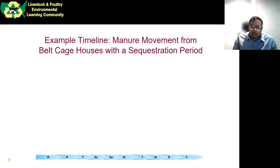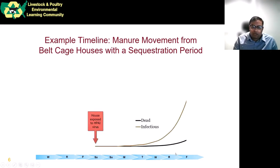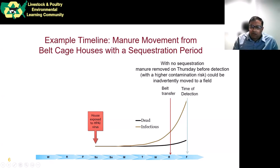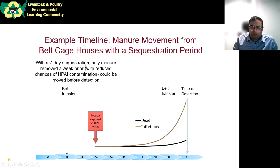Here we show an example timeline to illustrate the benefit of a sequestration holding period. If a house is exposed to HPAI virus, the number of diseased, infectious, and dead birds increases exponentially over time. If the time of detection is Friday, without any sequestration, manure removed on Thursday before detection — which has a higher contamination risk — could inadvertently be moved to the field. However, if you have a seven-day sequestration period, only manure removed a week prior, which has a much lower chance of HPAI contamination, could potentially be moved before detection. This illustrates how the holding time period can reduce the likelihood of moving contaminated manure off the premises.